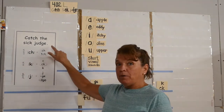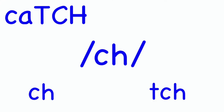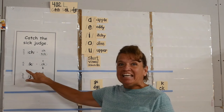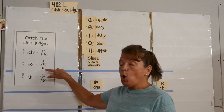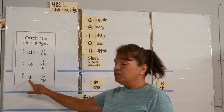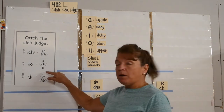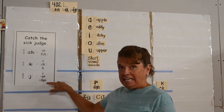Ch can be spelled with C-H or T-C-H. The kuh sound can be spelled with a C, a C-K, or a K. The juh sound can be spelled with a J, a G-E, or a D-G-E.